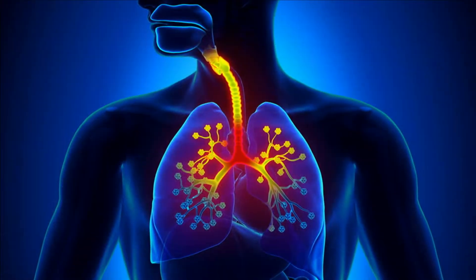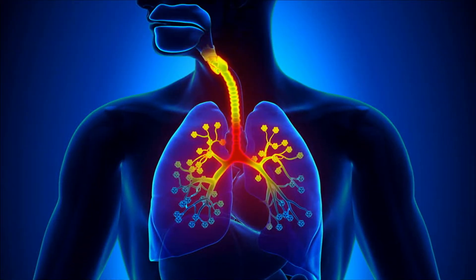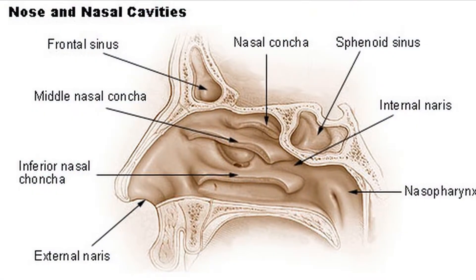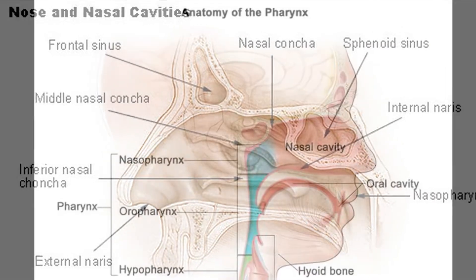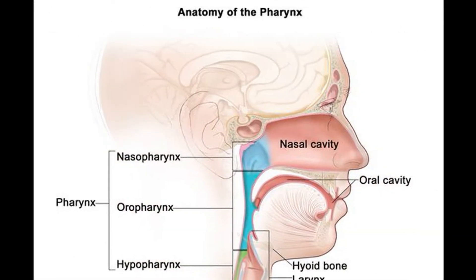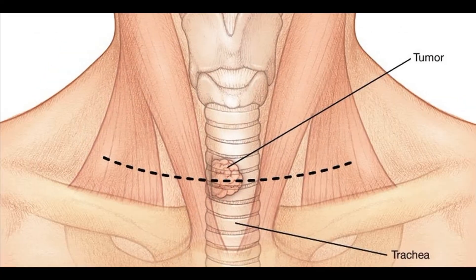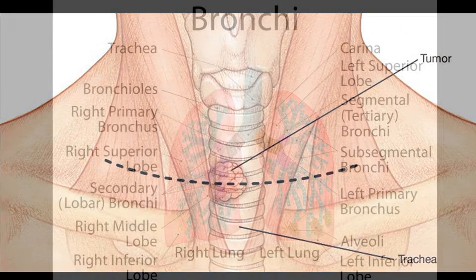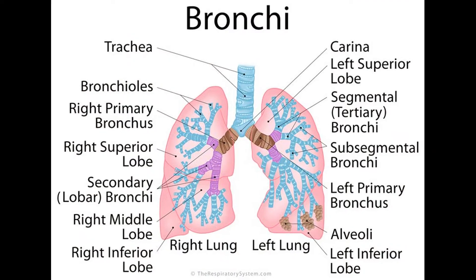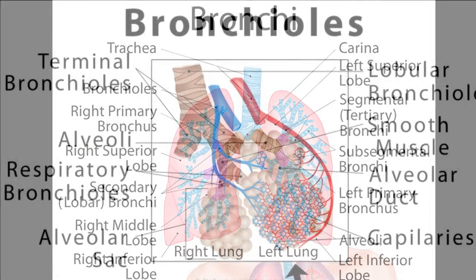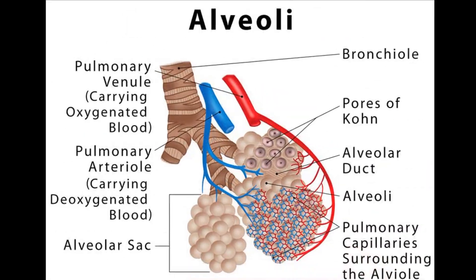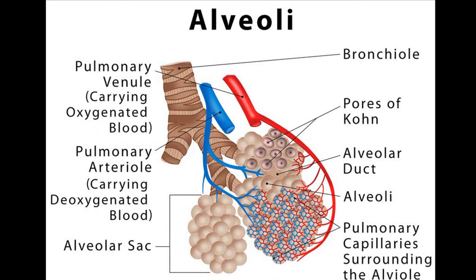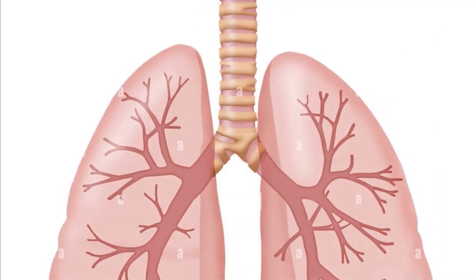The parts of the respiratory system are: nose and nasal cavity, pharynx, larynx, trachea, bronchi (singular: bronchus), bronchioles, alveoli and lungs.